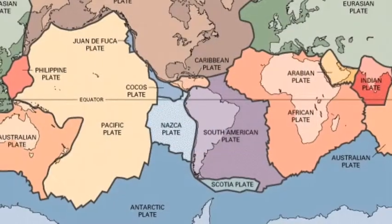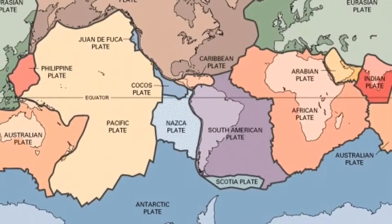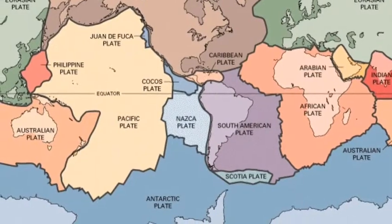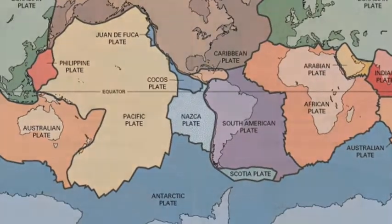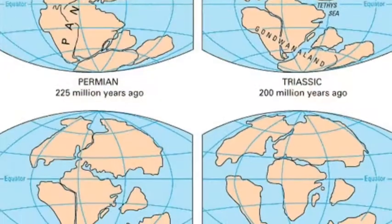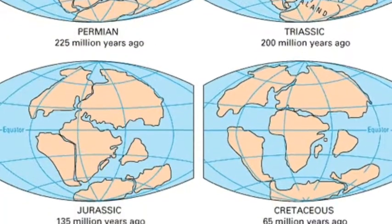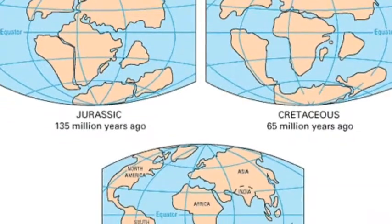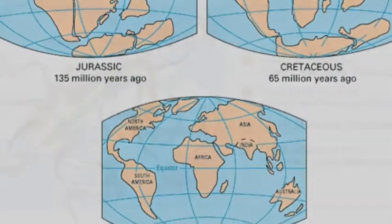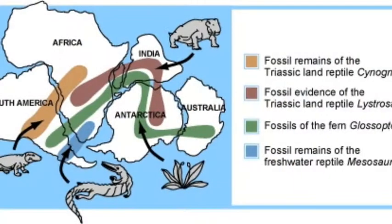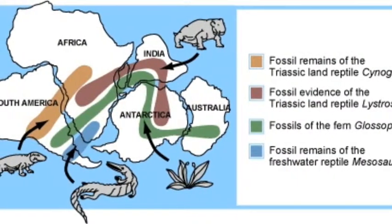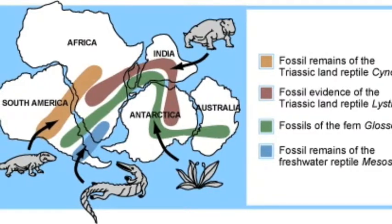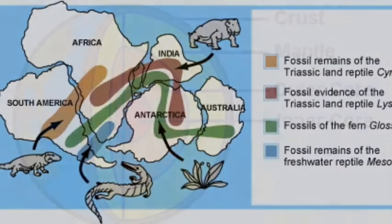Students will begin this unit by learning about Alfred Wegener's theory of plate tectonics, including the breaking up of the supercontinent Pangaea and the shifting of the continents over the years, as well as the fossil evidence that proves the continents were once connected.